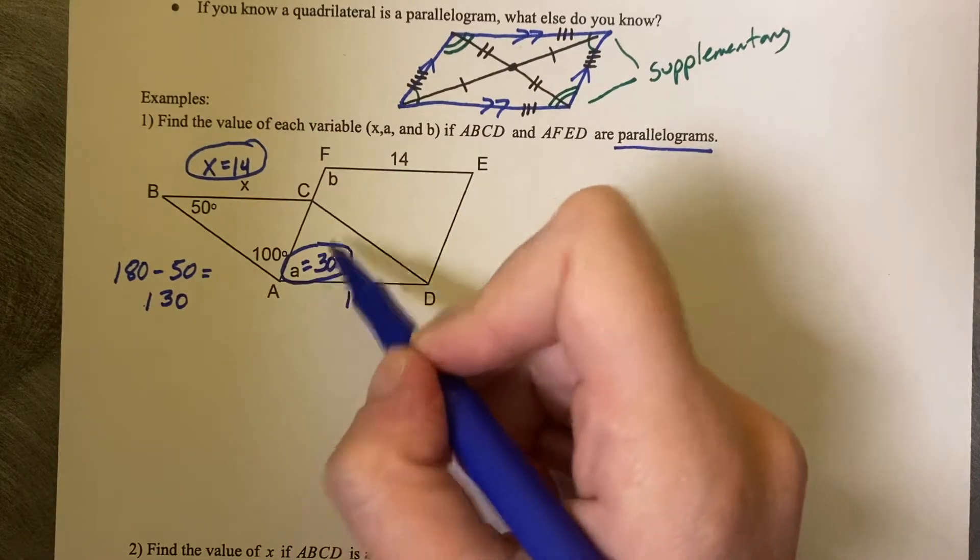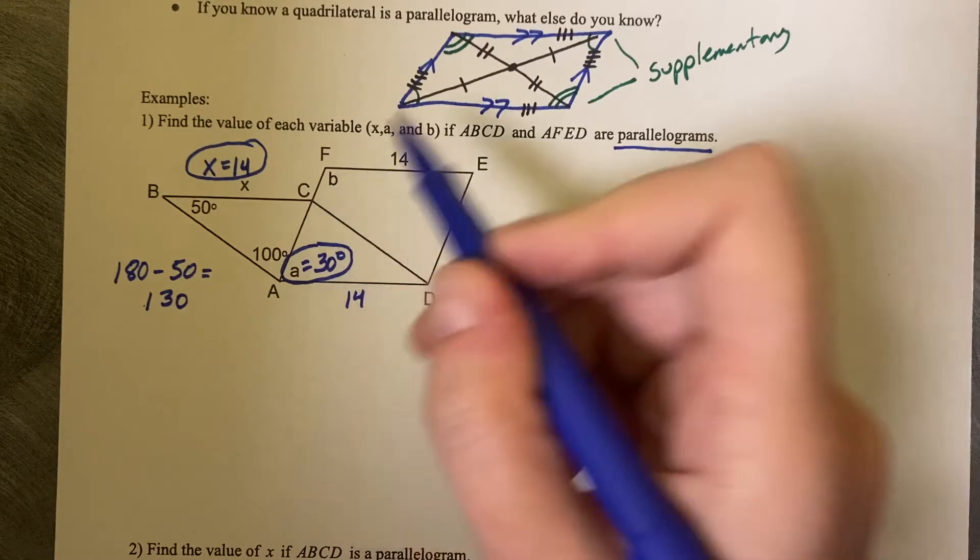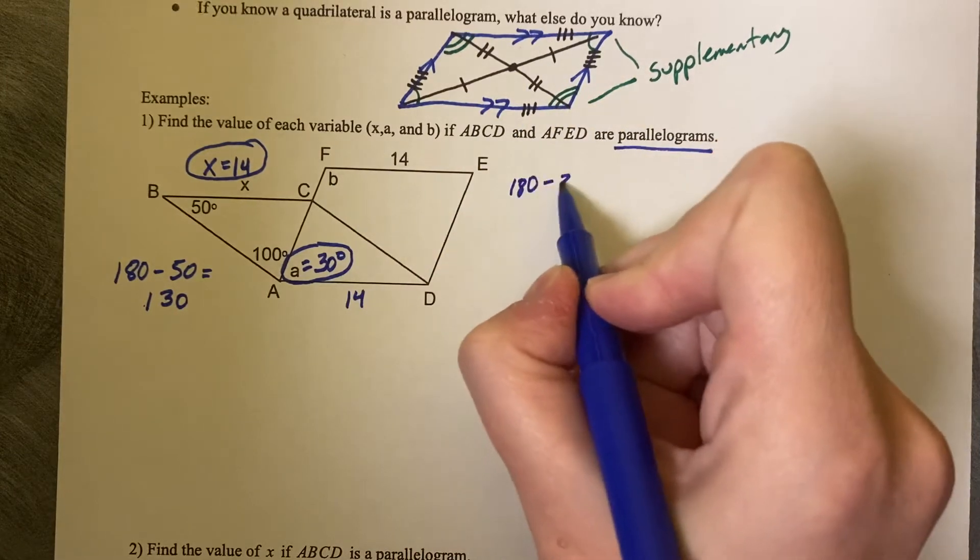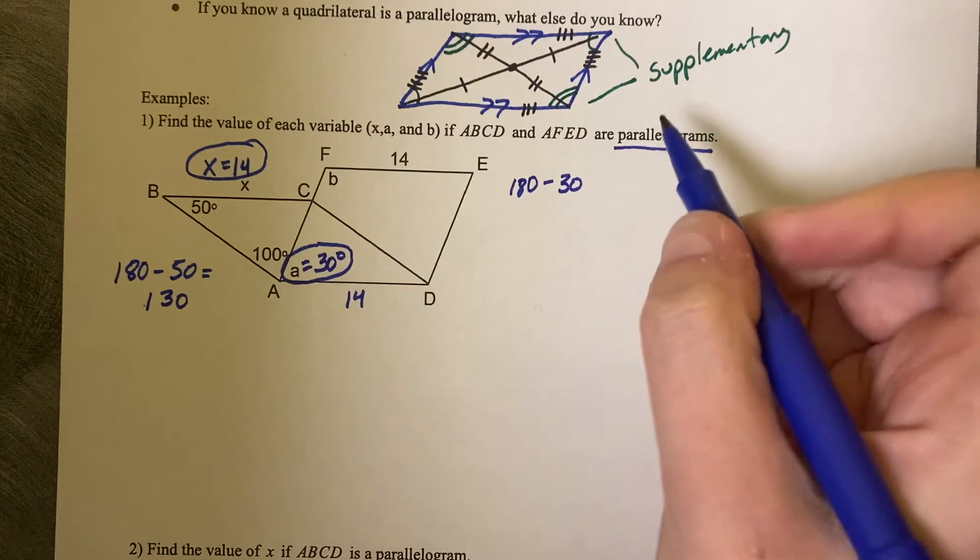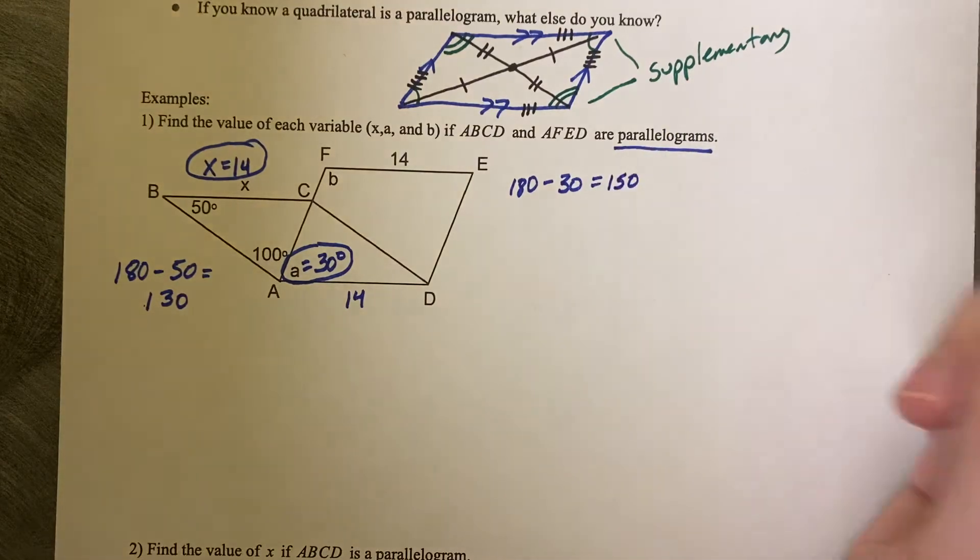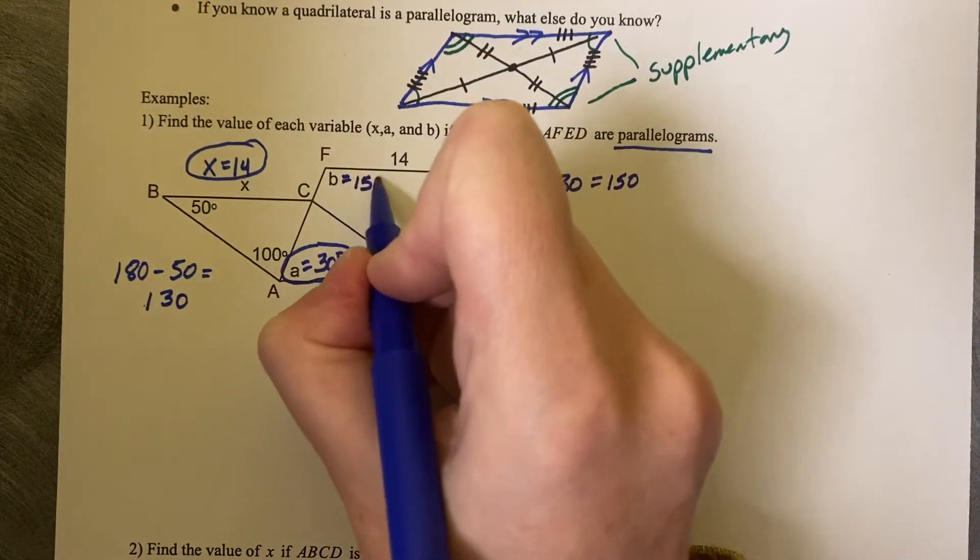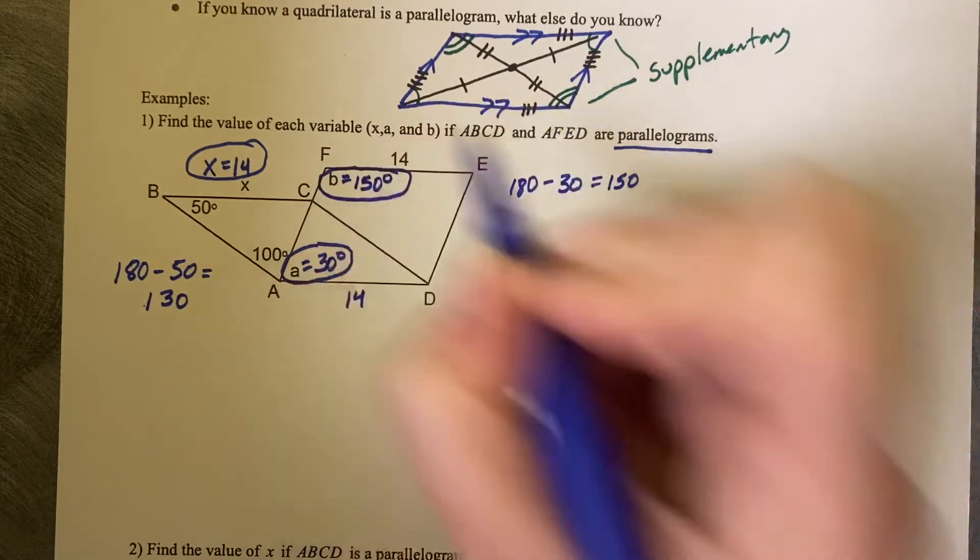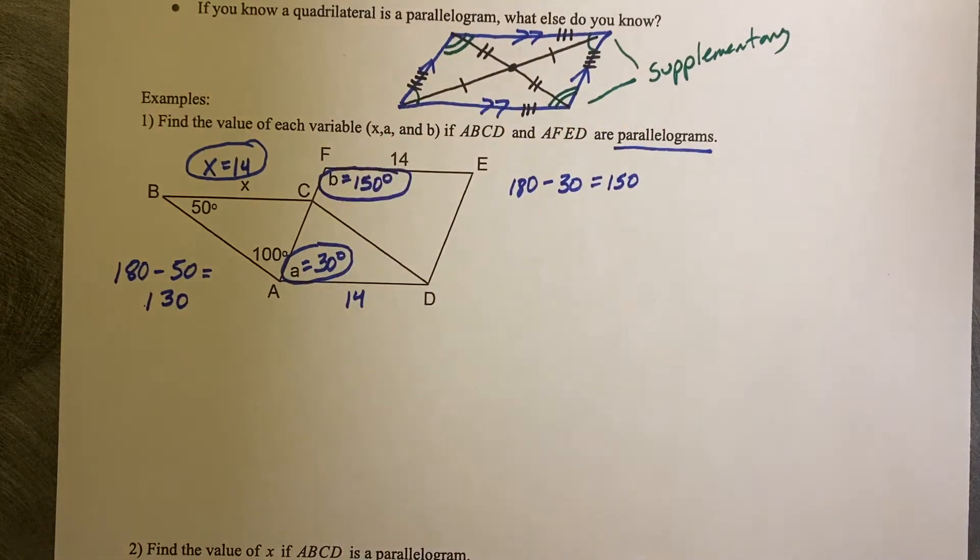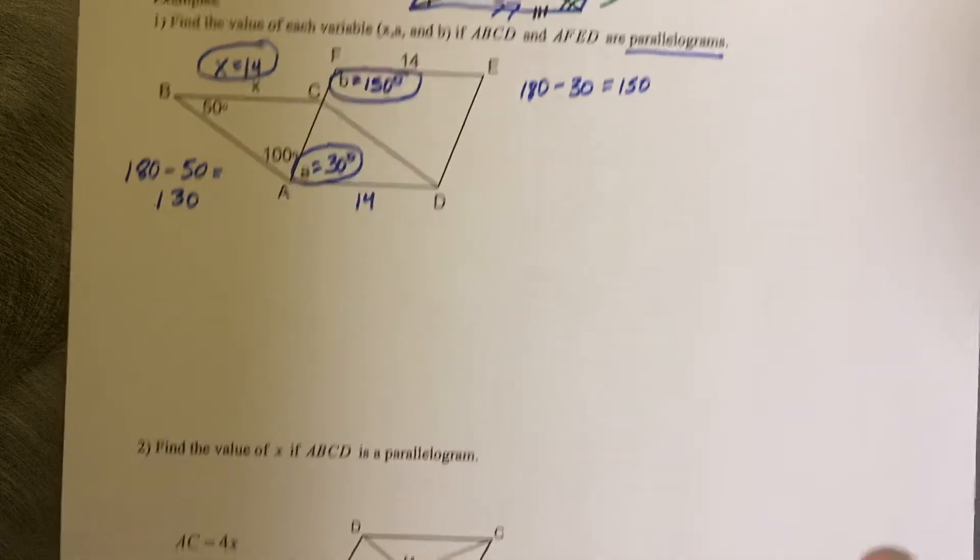And then if this is 30 degrees, we want to find the measure of angle B. We would do 180 minus 30, and we would see that that is 150. So angle B is 150. So using supplementary angles, you can get those corner angles.